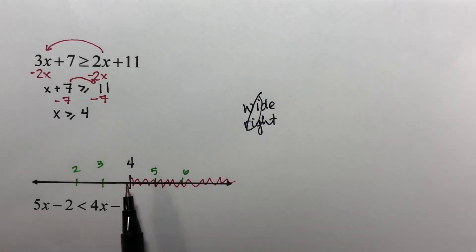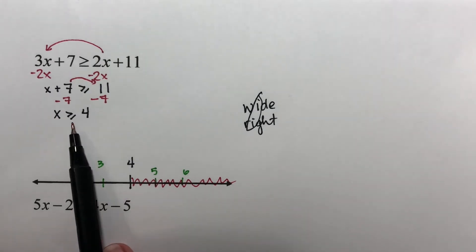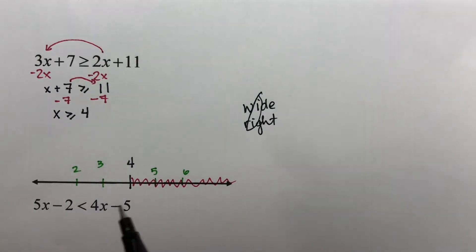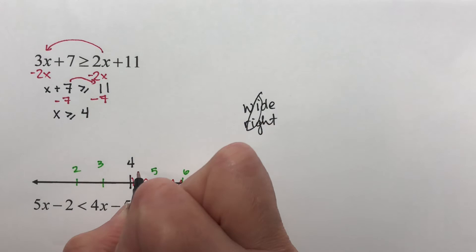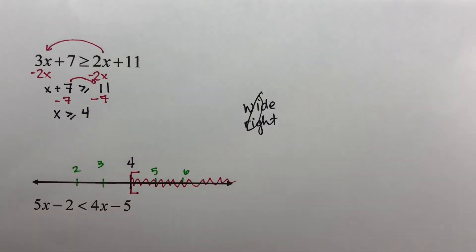Now I just need to decide whether I put a parenthesis or a bracket right here. And I look to this sign. It has an equal to on it. Therefore, it gets a bracket. This is the answer to your graph part.